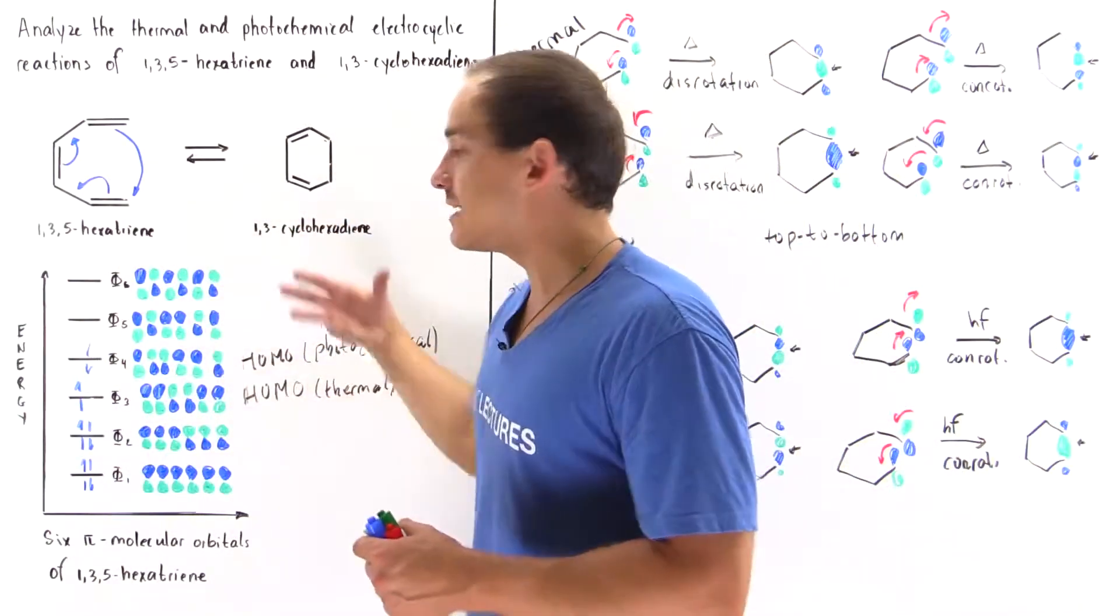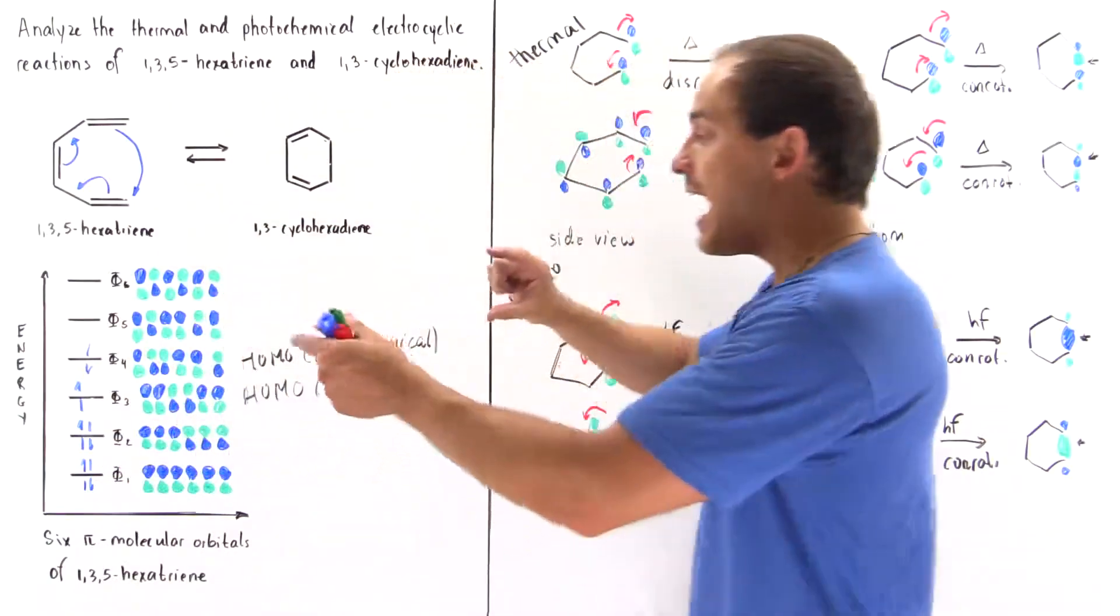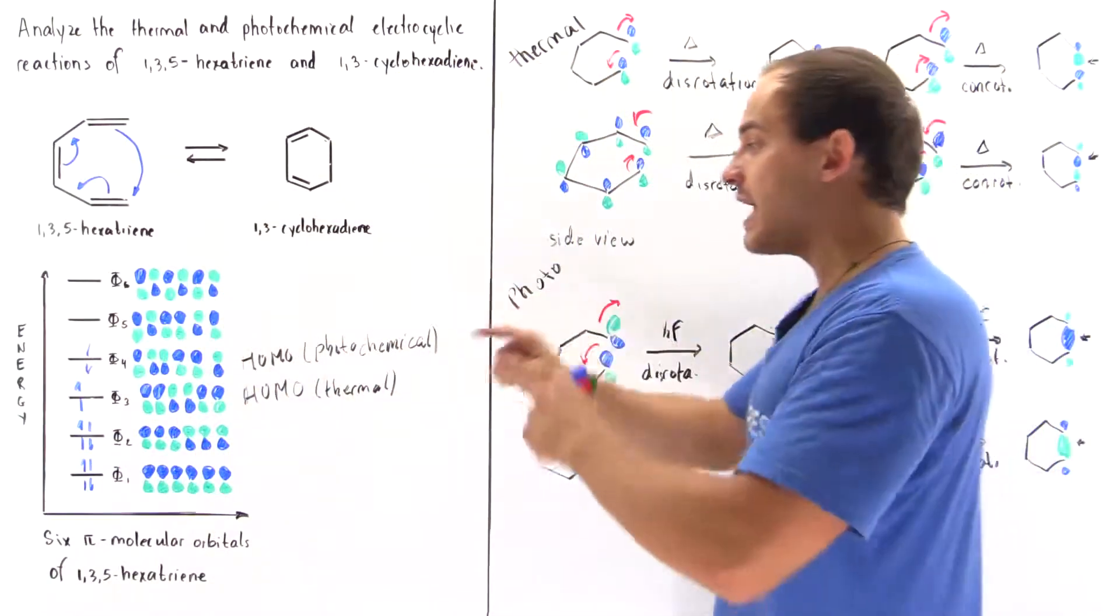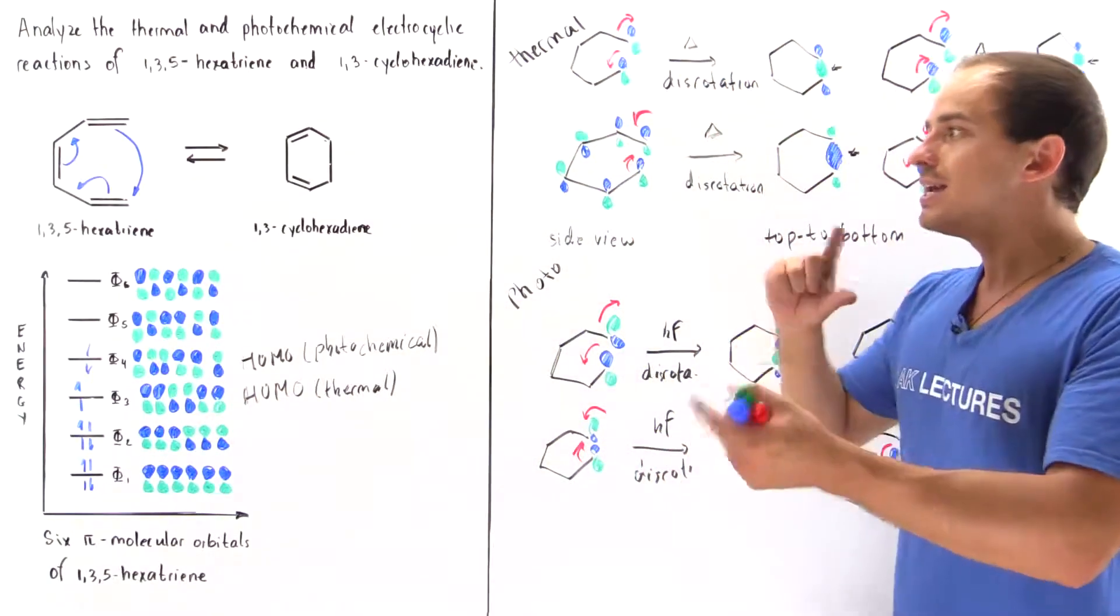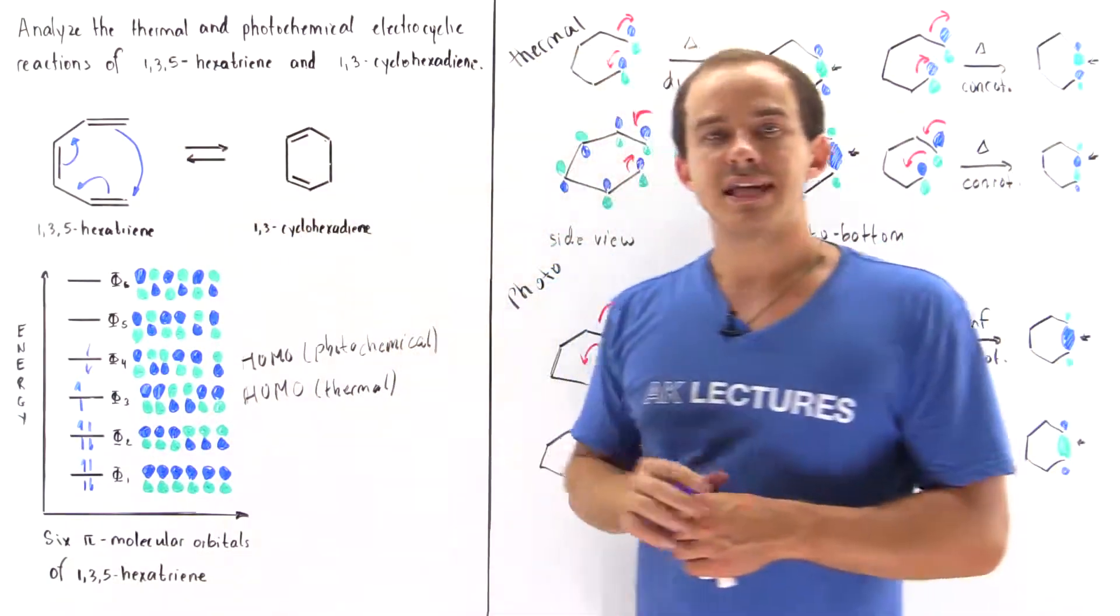you really have to analyze the orbitals and see how the orbitals have to rotate, how the highest occupied molecular orbital has to rotate to actually form that sigma bond.